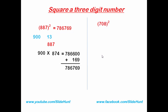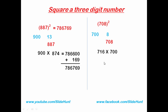The nearest hundreds number of 708 is 700, and the difference is 8. So 708 plus 8 is 716, and 708 minus 8 is 700. Multiply these two numbers and we get 501200.